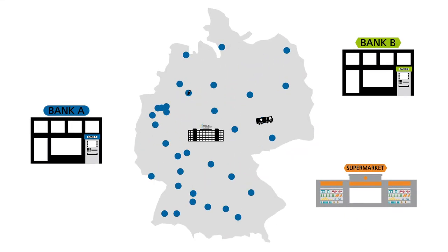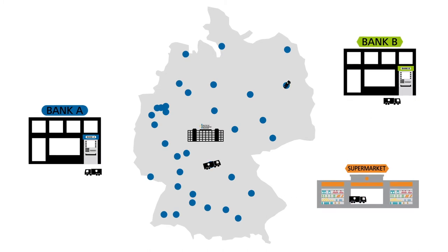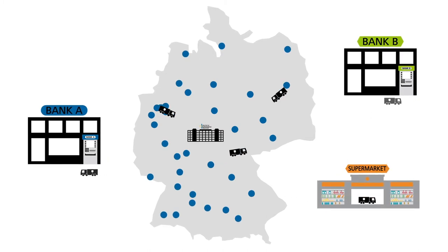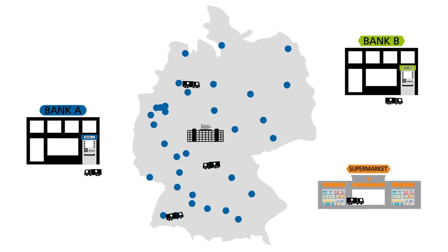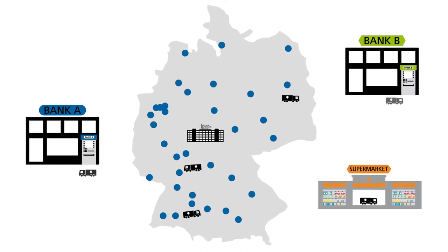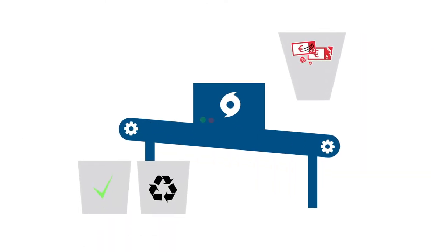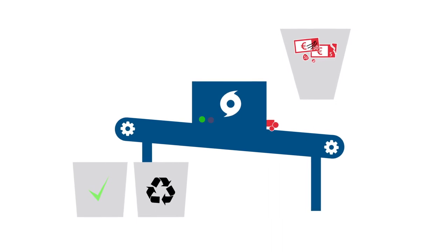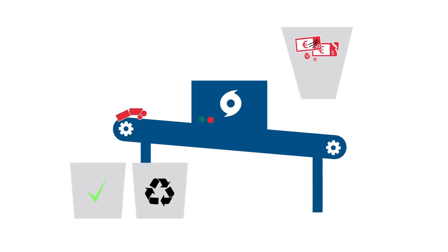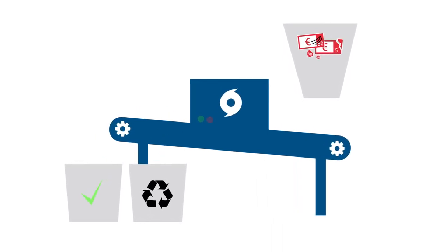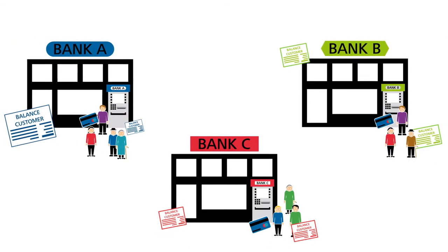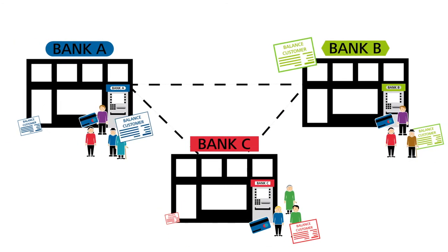Via its network of branches, the Bundesbank puts Euro cash into circulation. It further ensures that there is always sufficient high-quality Euro cash available in Germany. To this end, it replaces damaged banknotes and coins and withdraws counterfeit money from circulation.